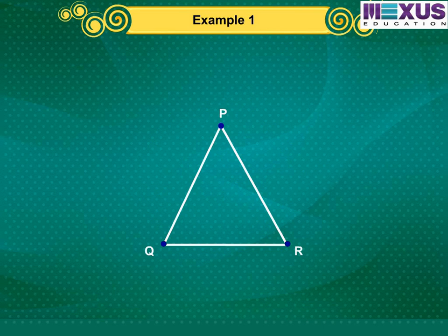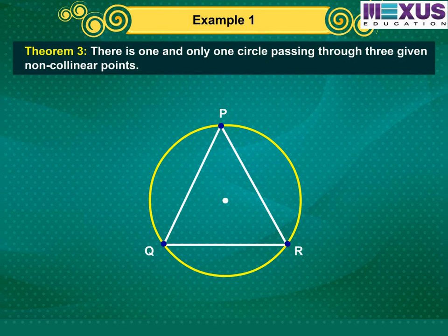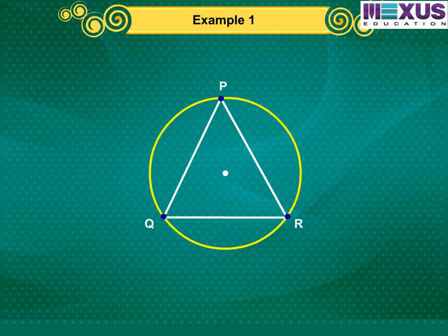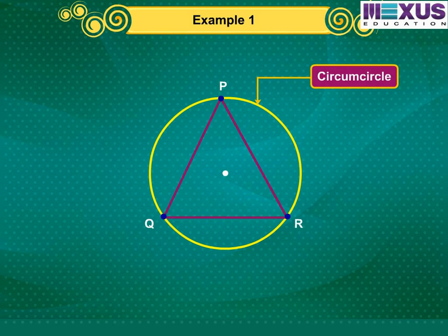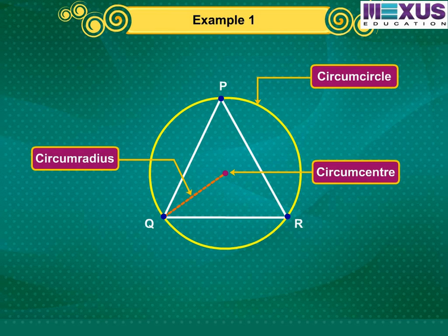If PQR is a triangle, then by theorem 3, there is a unique circle passing through the three vertices P, Q and R of the triangle. This circle is called the circumcircle of the triangle PQR. Its center is called the circumcenter and the radius is called the circumradius of the triangle.